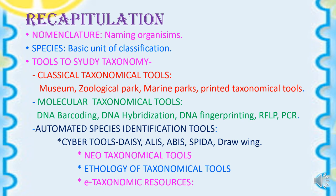Next, we came across tools to study taxonomy. Under classical taxonomical tools we have the museum, zoological park, marine parks, and printed taxonomical tools. In older days, people used these places for classifying animals. Later, due to technological advancement, new molecular tools developed and replaced the classical tools. Molecular tools are very accurate.